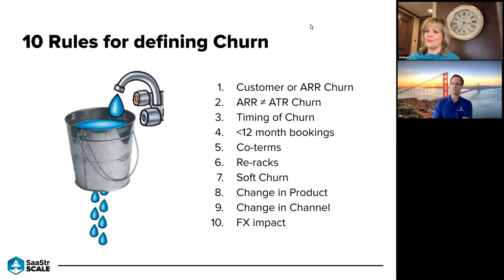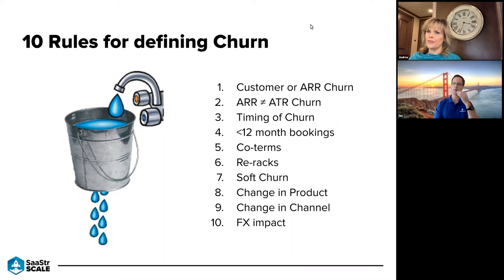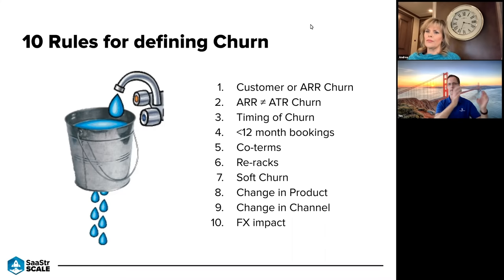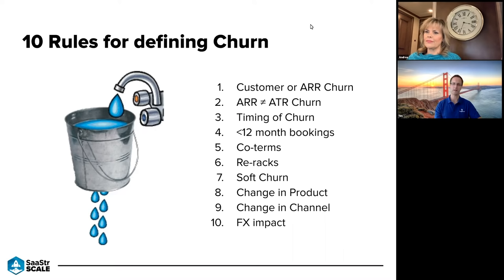Those are the 10 different rules. In summary: we focus primarily on ARR churn, and within that, primarily on available-to-renew churn — if you're running a renewals or customer success team, that's probably the best metric for understanding performance and business health. From a timing perspective, we try to understand early versus late churn dynamics but match churn to the available-to-renew period as much as possible. Exceptions around less-than-12-month renewals, co-terms, and re-racks typically don't involve churn as long as ARR value is growing from the beginning to the end of the period.